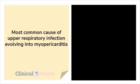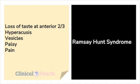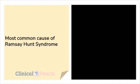Most common cause of upper respiratory infection evolving into myopericarditis: Coxsackie B. Syndrome associated with loss of taste at anterior two-thirds of the tongue, hyperacusis, vesicles, palsy, and pain: Ramsay Hunt syndrome. Most common cause of Ramsay Hunt syndrome: varicella zoster virus, more than herpes simplex virus.